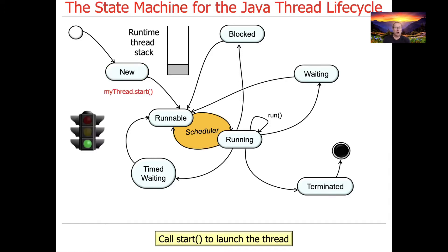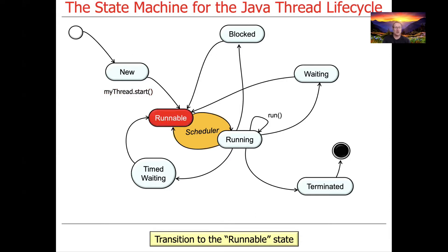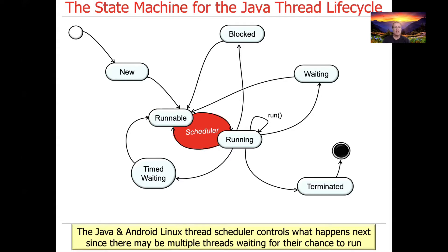At some point, someone will call start on the thread. If they never call start on the thread, then we never progress any further in the state machine sequence. But if they call start, then a new runtime stack is going to be created, and that will effectively launch or spawn the thread. At that phase, it'll then transition into the so-called runnable state. The runnable state actually occurs a lot in the lifecycle of a thread.